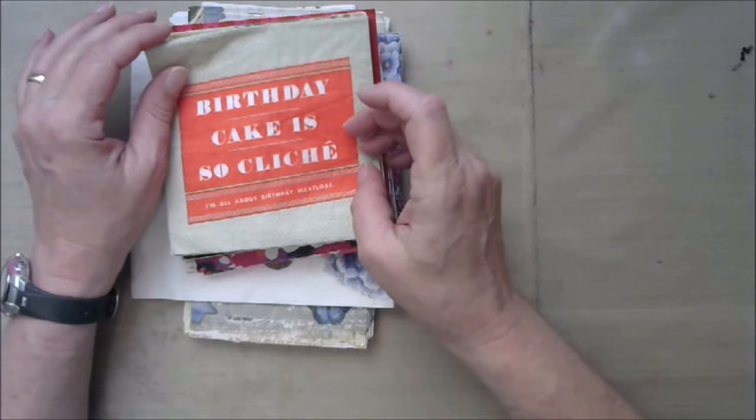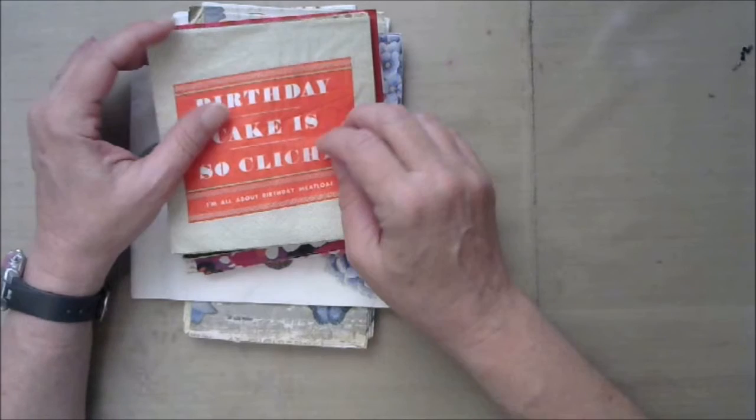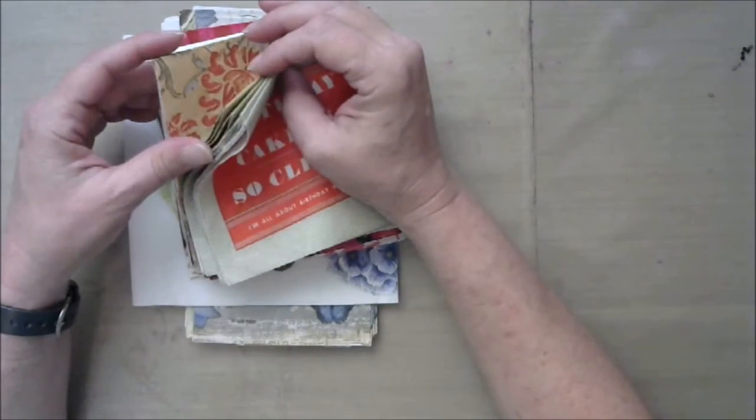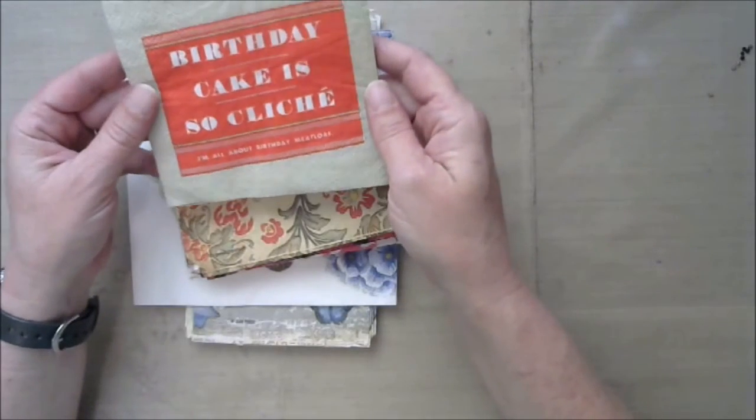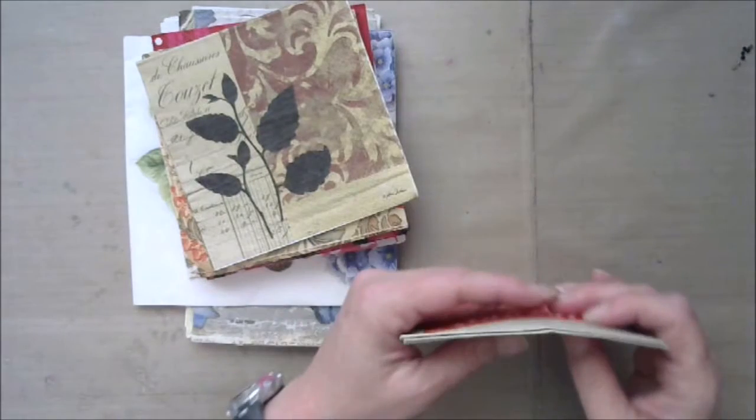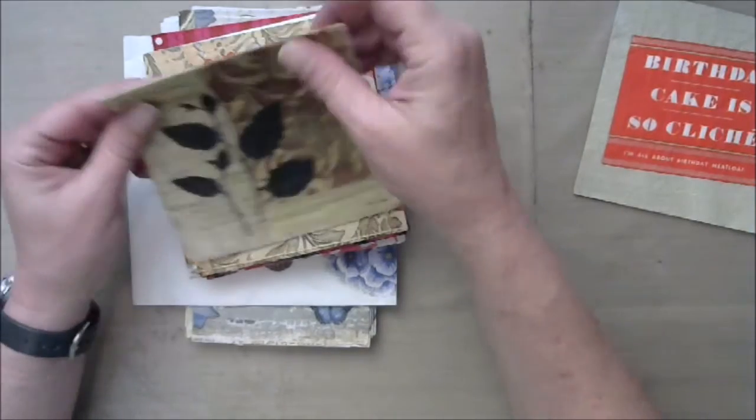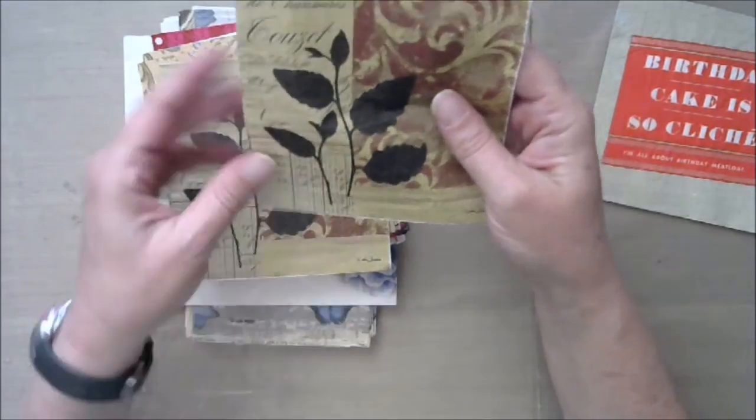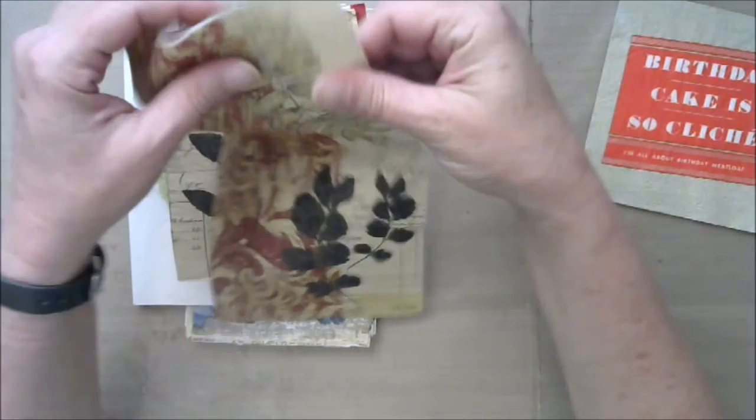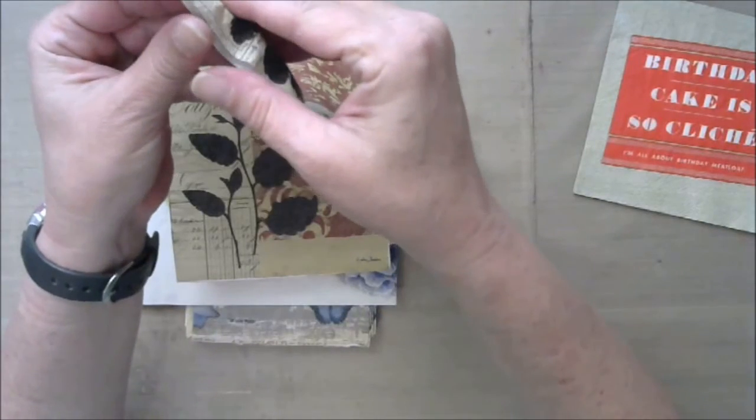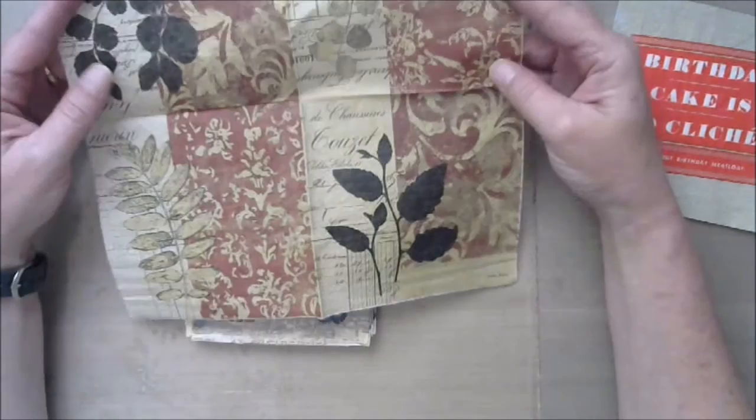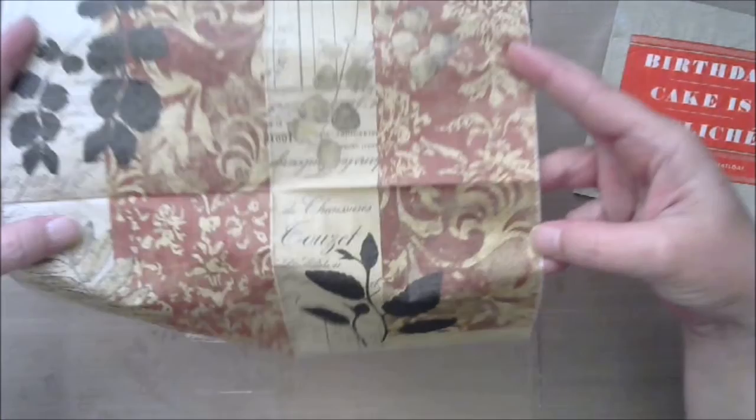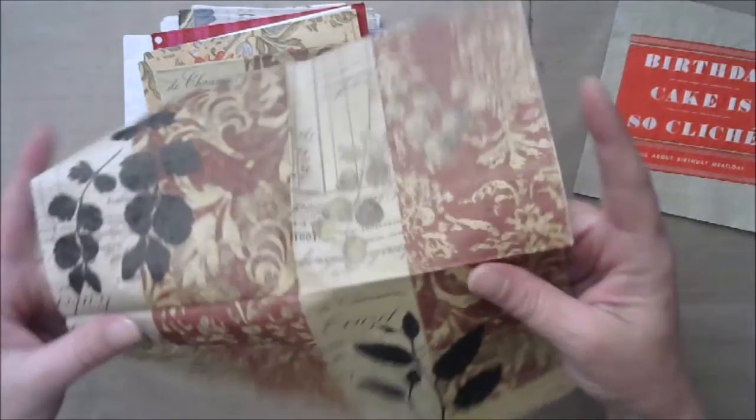Oh, and I got some pretties in here. I love napkins. Birthday cake is so cliche, I'm all about birthday meatloaf. That should be for my boys, they love mom's meatloaf. Not to mention they scream up the stairs, mom, the meatloaf! Oh, this is pretty. I love how it's got the ledger and the leaves. This would be awesome for collaging with. Beautiful, beautiful. Now if I could only fold it back the right way.